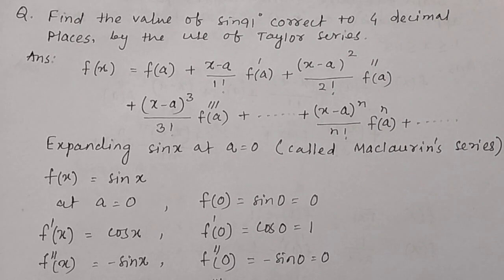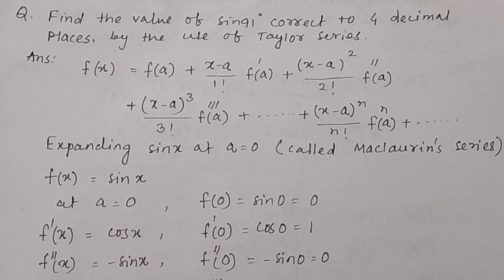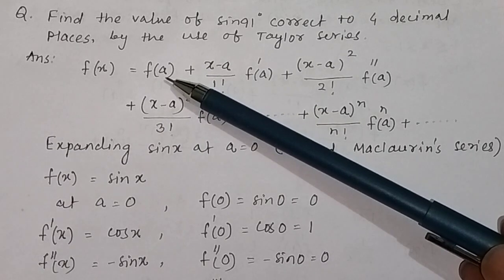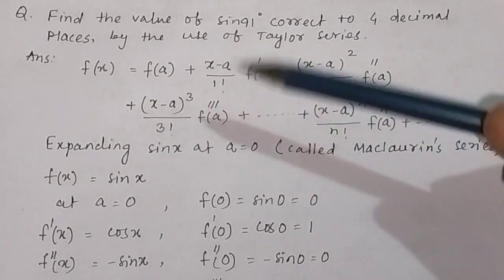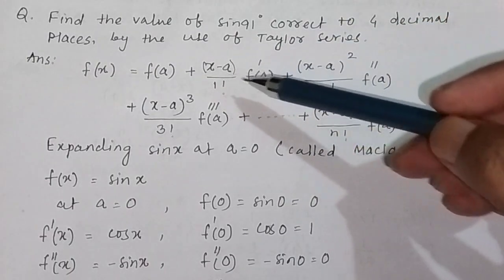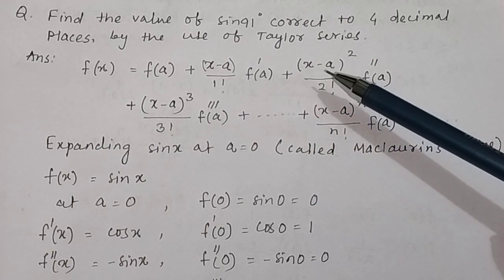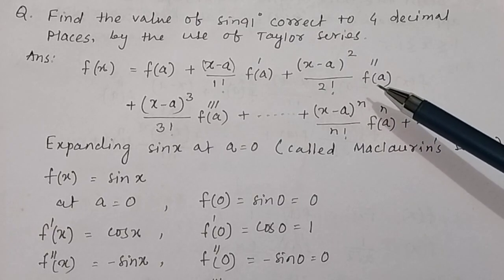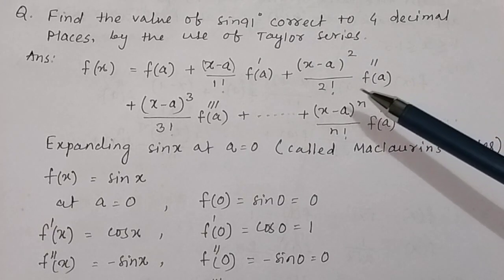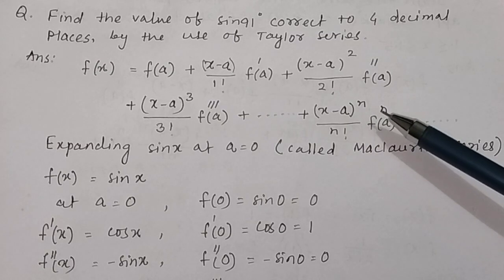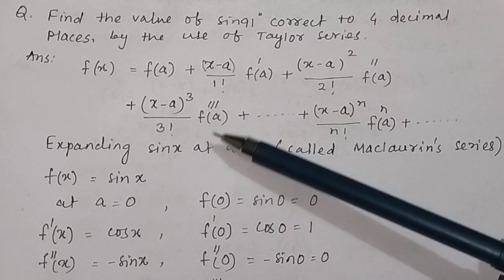Find the value of sin 91 degrees correct to 4 decimal places by the use of Taylor series. From the expansion of Taylor series we know that f(x) equals f(a) plus (x minus a) divided by factorial 1 into the first derivative at x equal to a, plus (x minus a) squared divided by factorial 2 into the second derivative at x equal to a, and so on up to the nth order derivative.